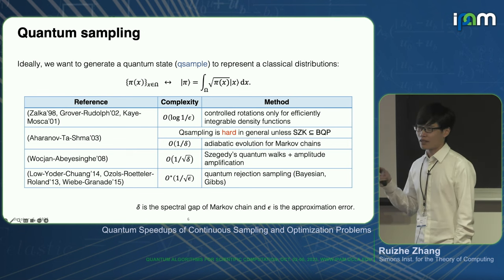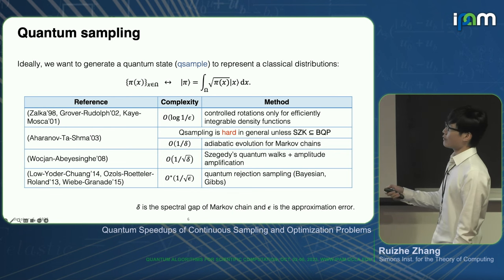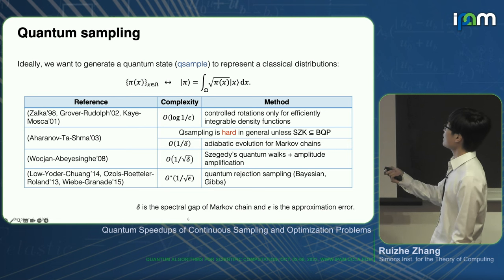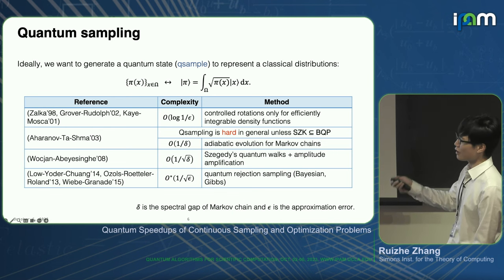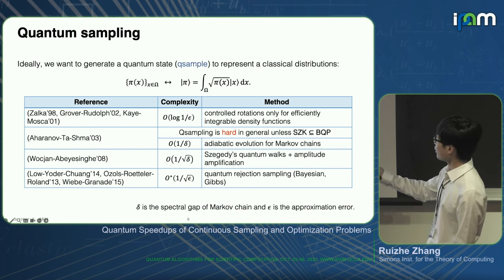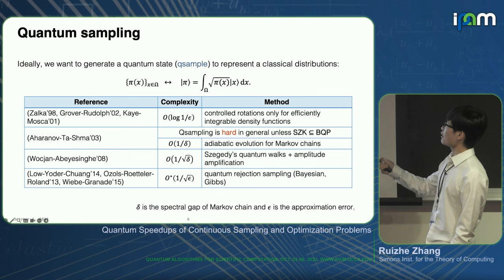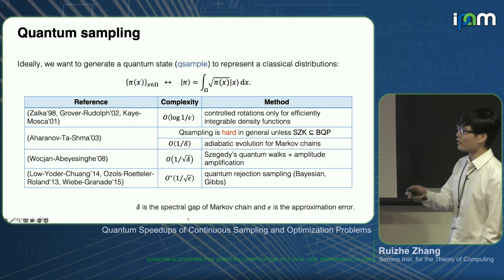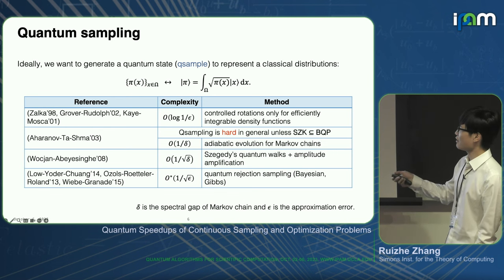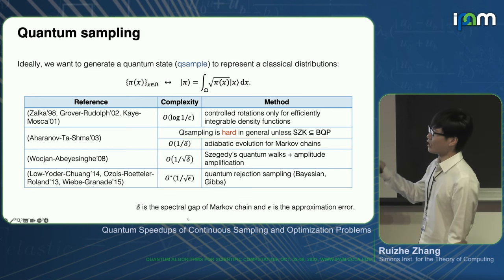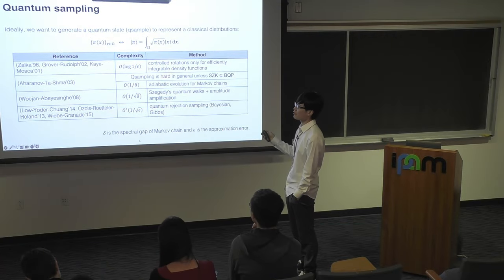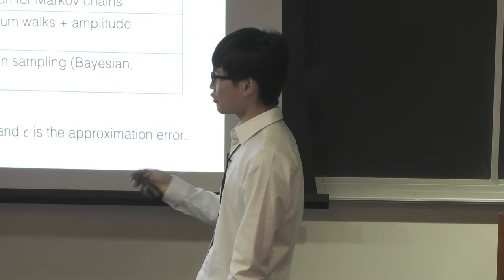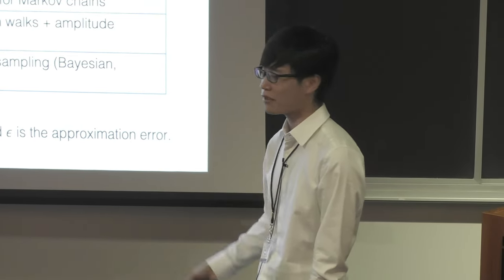In terms of quantum sampling, we want to prepare a special quantum state called a q-sample, which encodes the classical distribution. If pi of x is a classical distribution, we want to prepare a state with amplitude equal to the square root of pi of x. This is one way to achieve sampling in quantum—not the unique way—but it has advantages for following procedures like estimating random variables. In this talk, we only care about the classical and quantum query complexity.